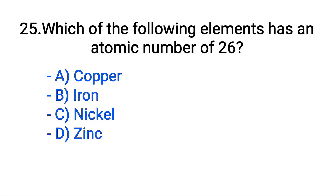Question number 25. Which of the following elements has an atomic number of 26? Option A: Copper. B: Iron. C: Nickel. D: Zinc. The correct answer is option B, Iron.